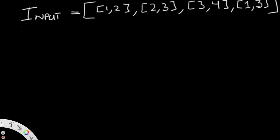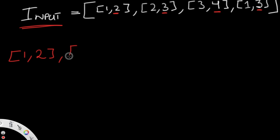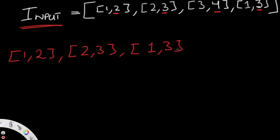So the end time is going to be a major factor. We're going to sort our input by end time — that is, by the last element in each interval. Our end times are 2, 3, 4, and 3. After sorting, the order becomes: [1,2], [2,3], [1,3], [3,4]. The [1,3] comes before [3,4] since they share the same end time of 3, maintaining original stability.